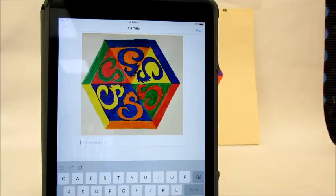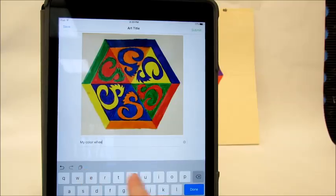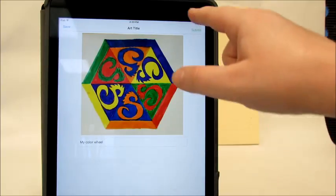It then brings you to a page that allows you to write a title. So I'm going to say my color wheel. You can either press done down here or you can press submit.